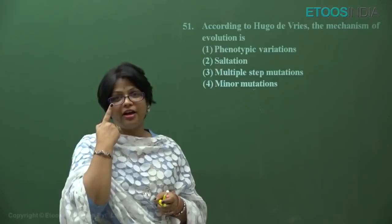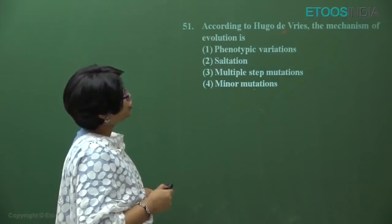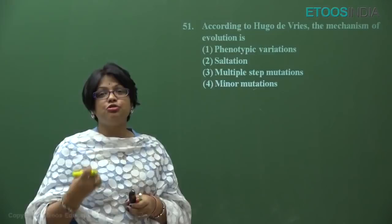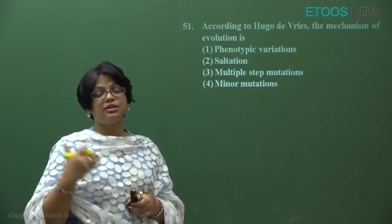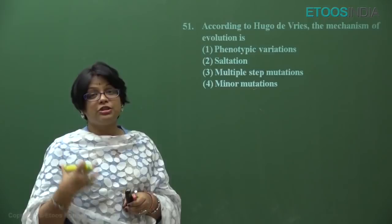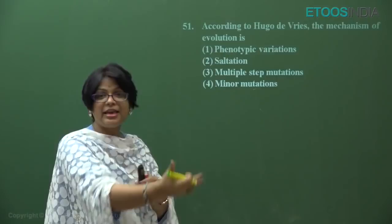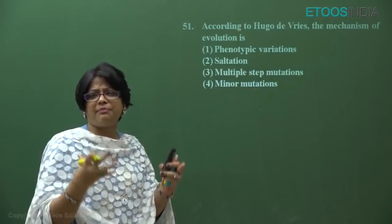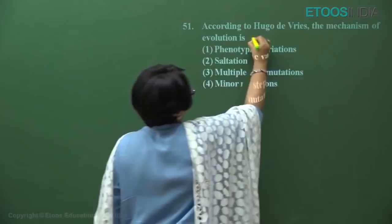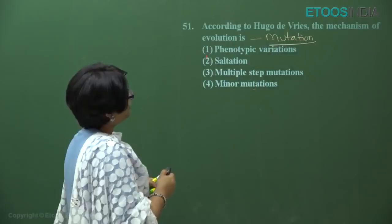Question number 51 from evolution: according to Hugo de Vries, the mechanism of evolution is — we know that according to Darwin, evolution is due to minor heritable variations. But according to Hugo de Vries, speciation — formation of new species — occurs due to mutations that are random, directionless, and large. It is a single-step large mutation that can produce a new species in the very next generation.